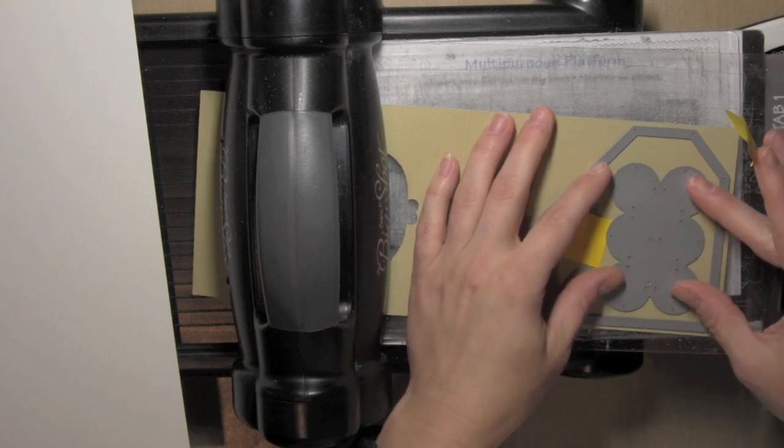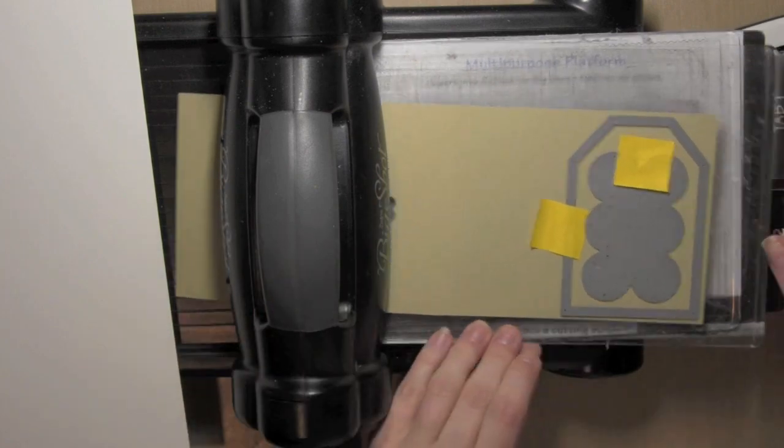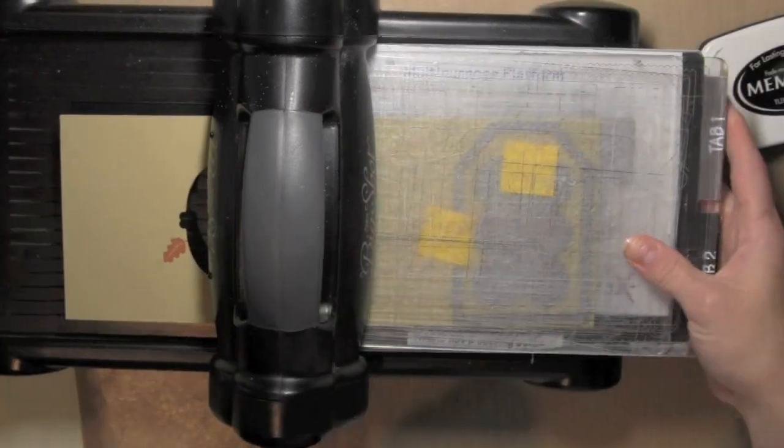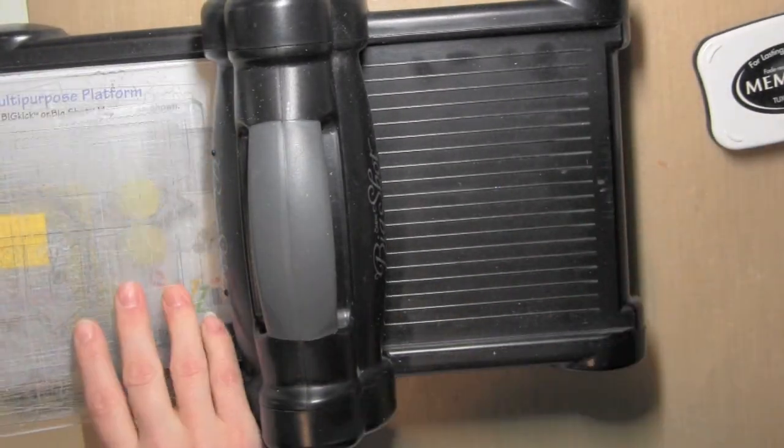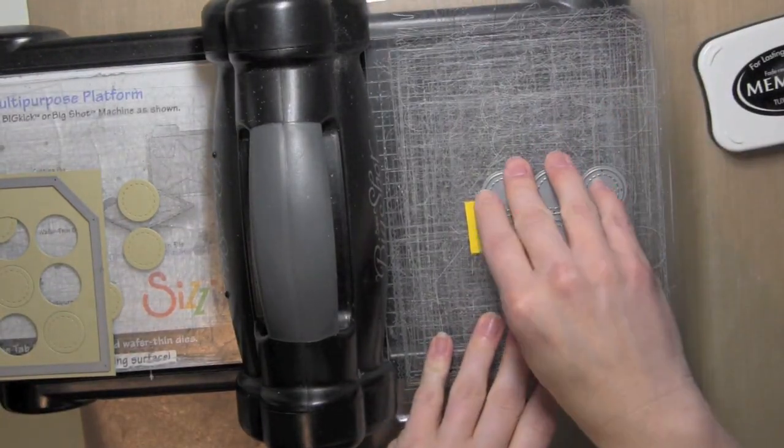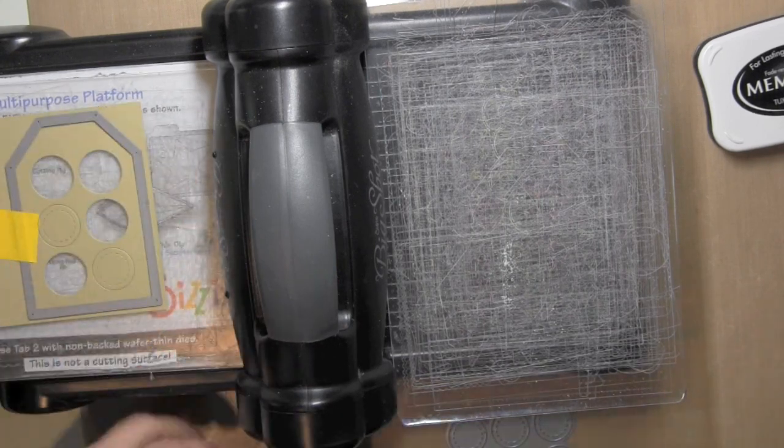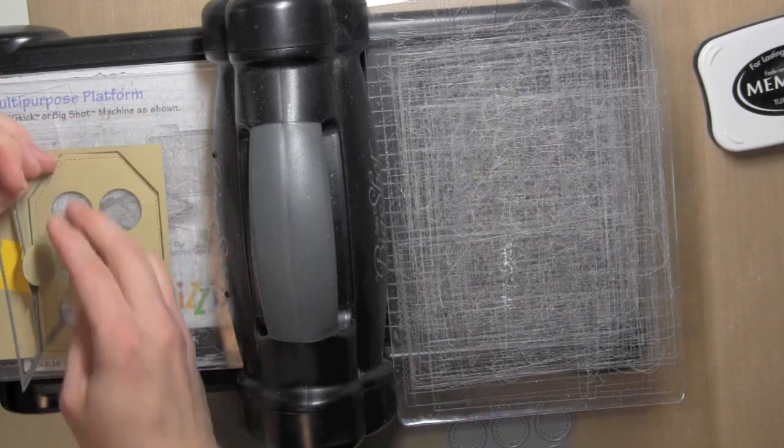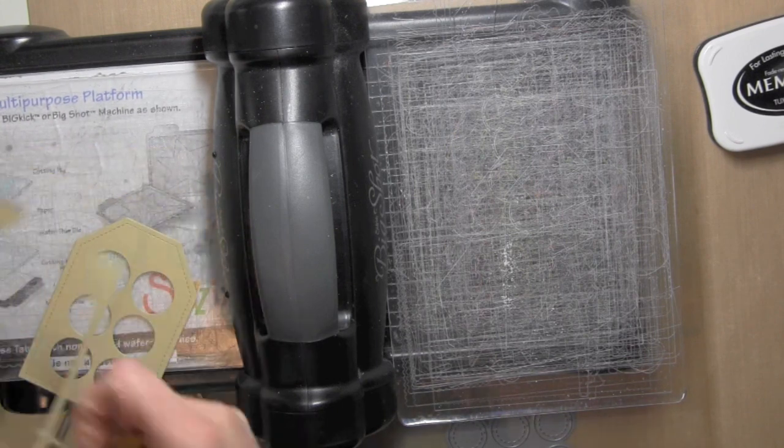So for my tag here, I'm going to cut the tag shape and the windows from some khaki Simon Says Stamp card stock and I've just taped those in place with a little post-it tape because I really need it to be as centered as possible. I'm going to pop out all those little center pieces and I can save those for another project if I want to.